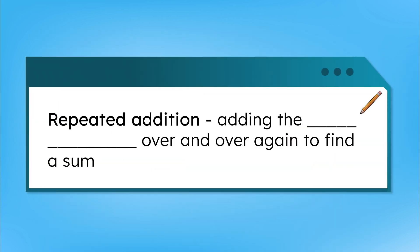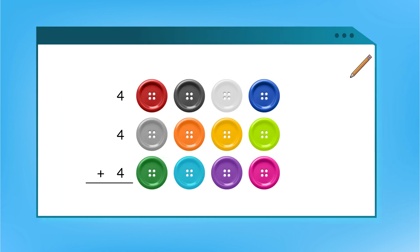Repeated addition is adding the same number over and over again to get a sum. It's the same as adding multiple addends together like we did in our first math quest of unit nine, only this time all the addends are the same number. Let's try grouping the numbers and adding vertically. If we add four plus four, that equals eight. Plus four more is twelve. That's twelve total buttons in the array. Wow, that was definitely faster than counting by ones.